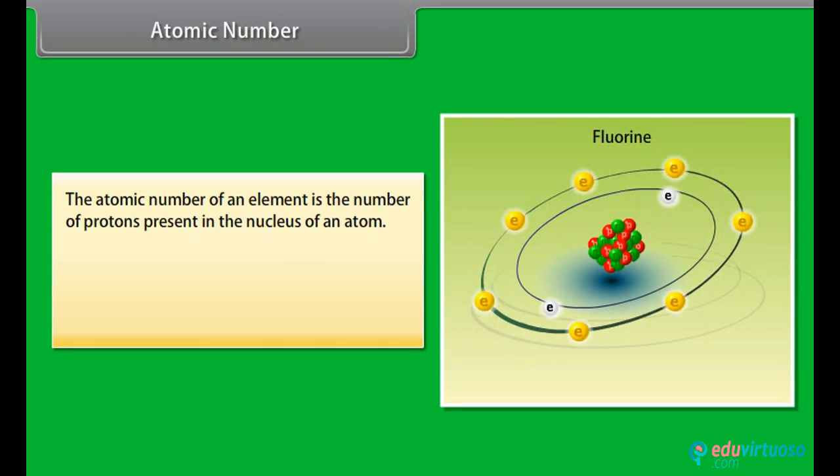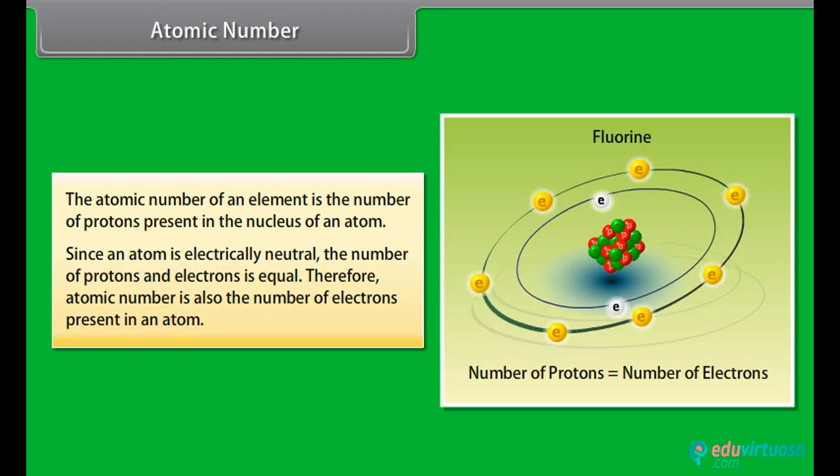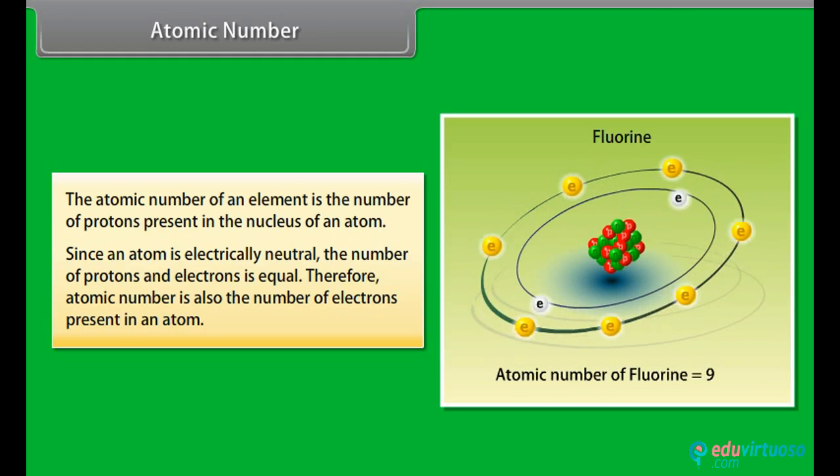Atomic Number. The atomic number of an element is the number of protons present in the nucleus of an atom. Since an atom is electrically neutral, the number of protons and electrons is equal. Therefore, atomic number is also the number of electrons present in an atom.